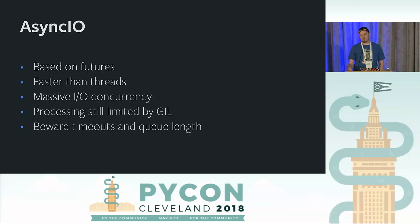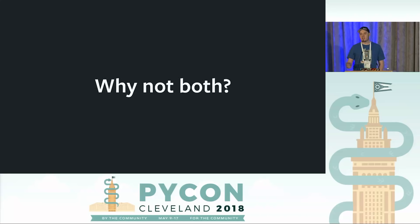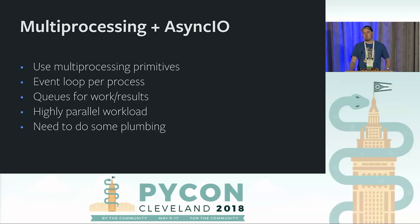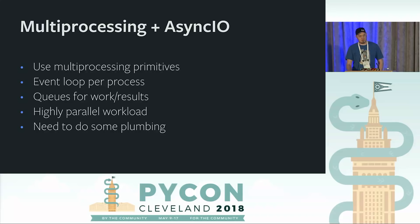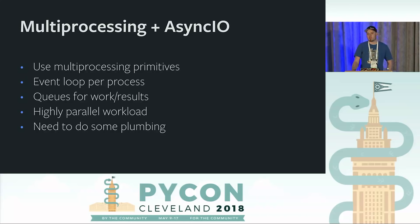Ideally we want the I/O concurrency of async I/O and the processing concurrency of multiprocessing — so why not combine the strengths of the two? They're quite complementary. Using primitives from the multiprocessing module, we can actually run an async I/O event loop on each child process, and use multiprocessing queues as communication from the parent to the child processes. This allows you to get an even higher parallel workload — if you can do 100 concurrent requests on a single process, with 10 processes you could potentially get 1,000 concurrent requests.